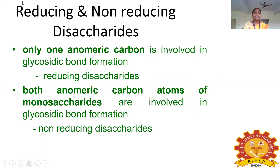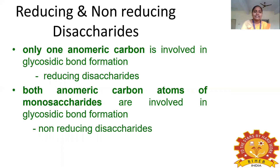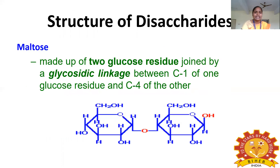Disaccharides are of two types: reducing and non-reducing. Reducing disaccharides (e.g., maltose and lactose) have only one anomeric carbon involved in the glycosidic bond formation. Non-reducing disaccharides (e.g., trehalose and sucrose) have both anomeric carbons involved in the glycosidic bond. Maltose comes under reducing disaccharide.